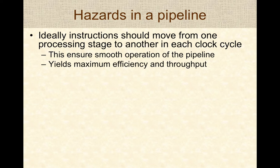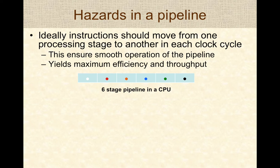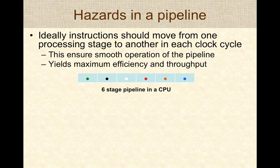Ideally, instructions in a pipeline should move from one stage to another each clock cycle to ensure smooth and efficient operation, yielding maximum throughput. In a six-stage pipeline, you would expect instructions to move along different stages every clock cycle to keep the pipeline operating smoothly and efficiently.